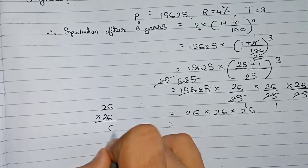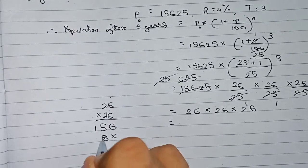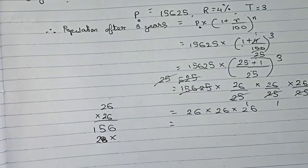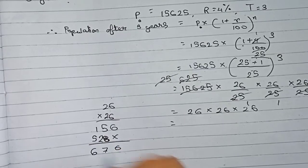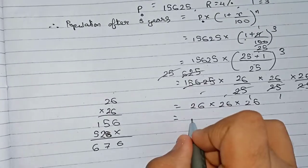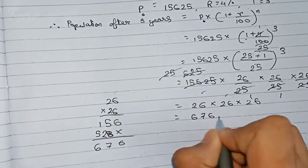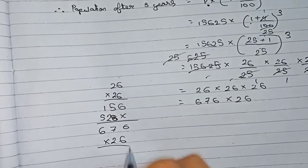First you do 6 × 6 is 36, carry 3... Cross: 2 × 6 is 12, carry 1... 5 × 6, carry... So first, 26 × 26 becomes 676. Now again into 26...